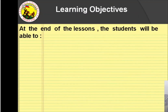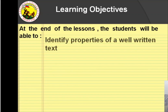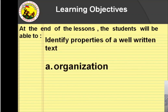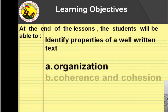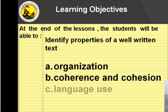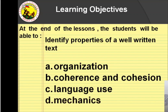The learning objective is: at the end of the lesson, the students will be able to identify properties of a well-written text with organization, coherence and cohesion, language use, and mechanics.